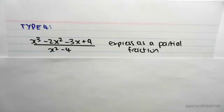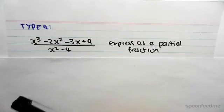Hey guys, the objective of this video is to do an example looking at Type 4 partial fractions. So we have x cubed minus 2x squared minus 3x plus 9 over x squared minus 4.